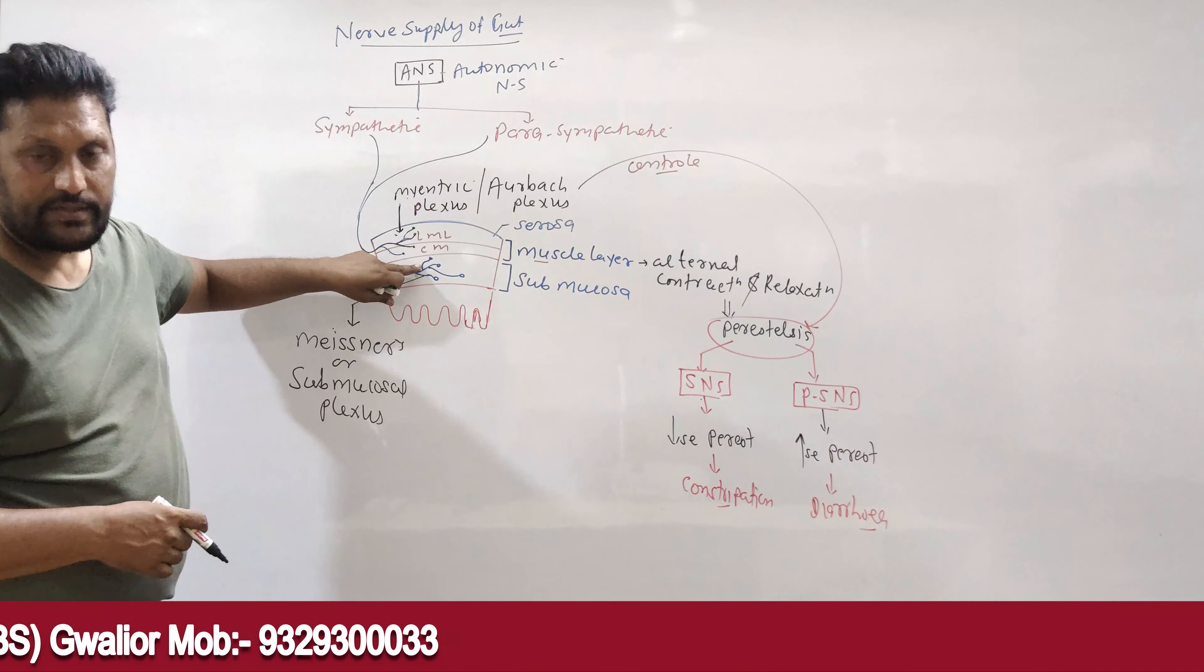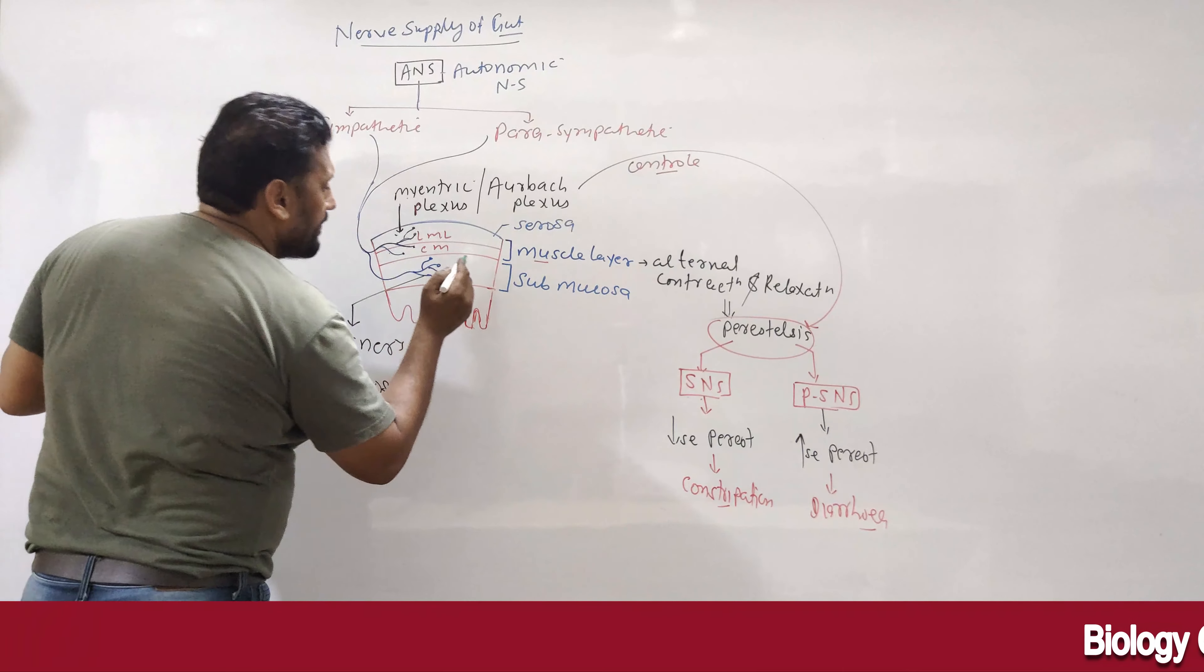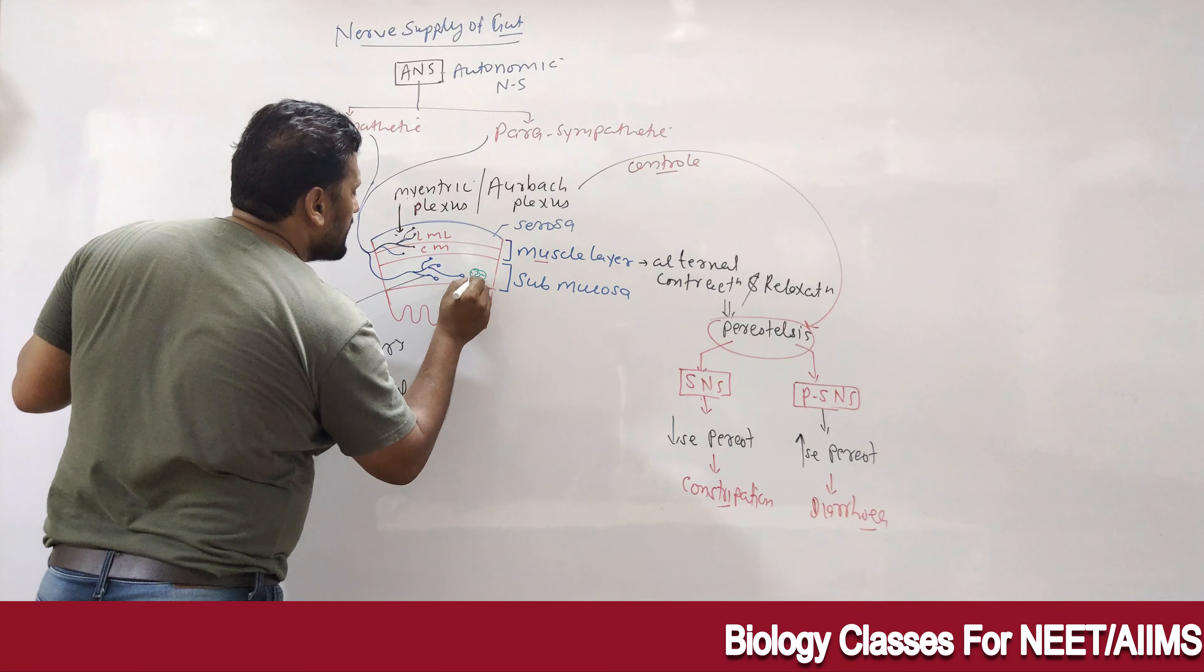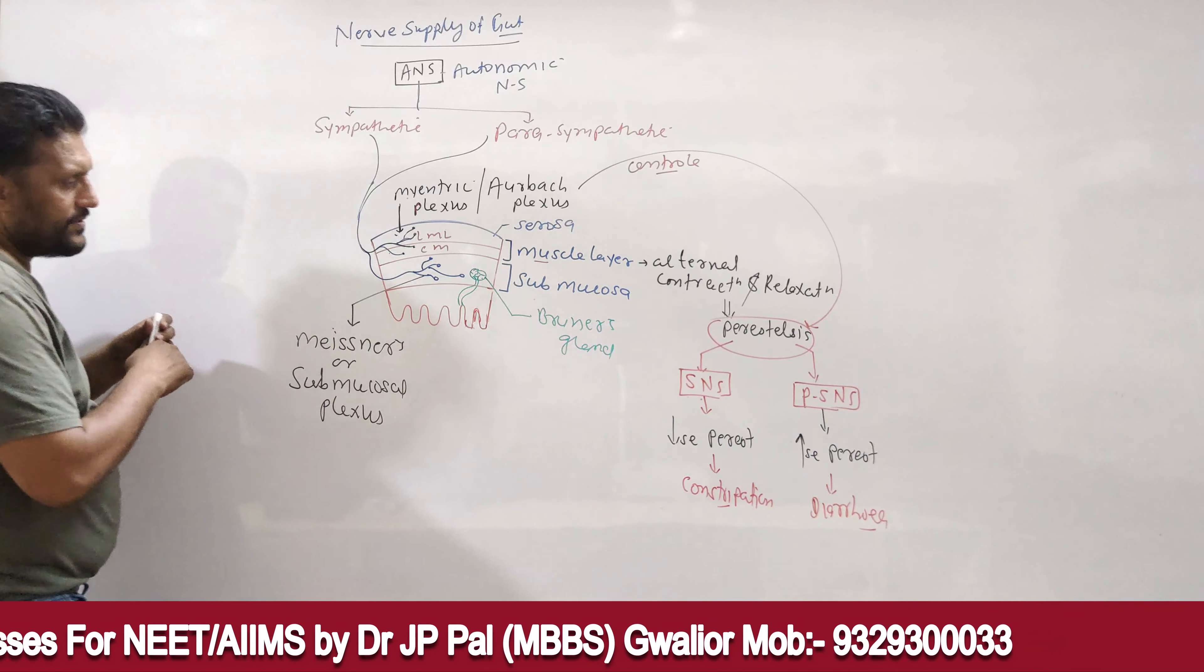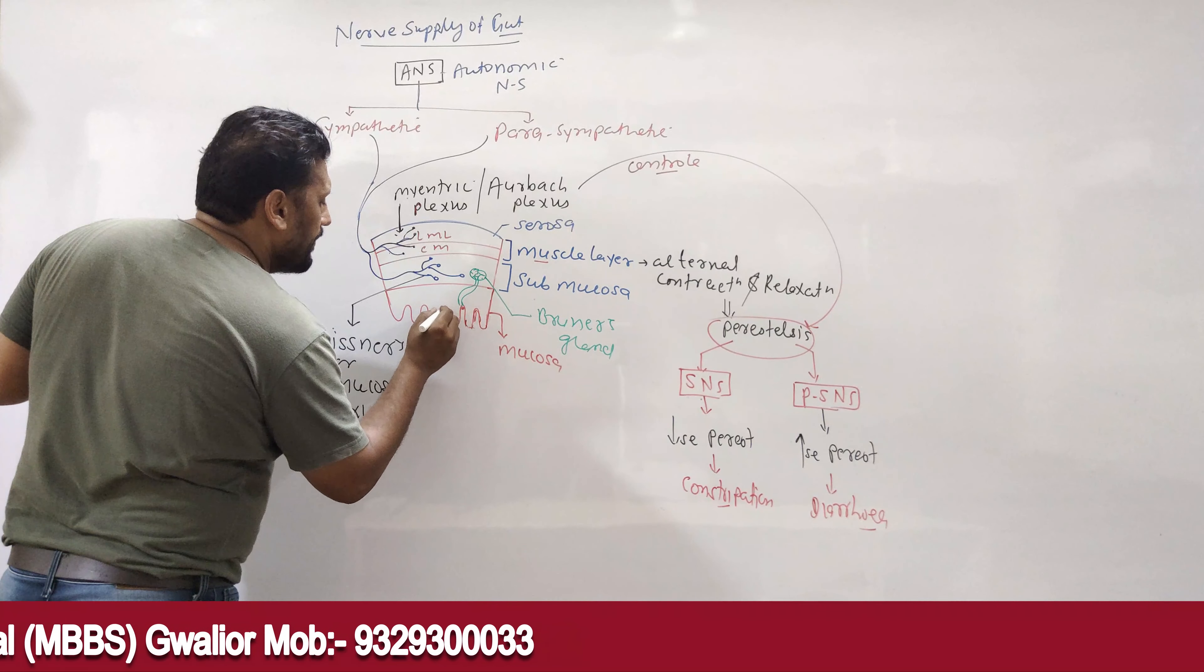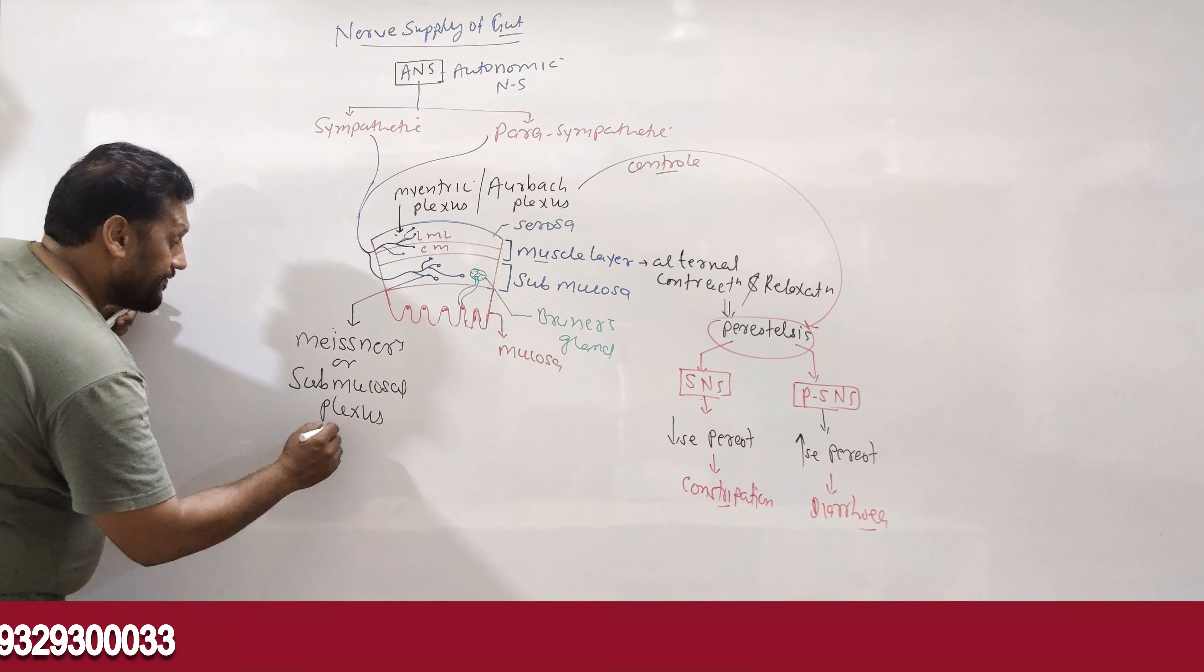Now you can see this is the myenteric plexus or submucosal plexus. Submucosal is the plexus of sympathetic and parasympathetic present in submucosa.